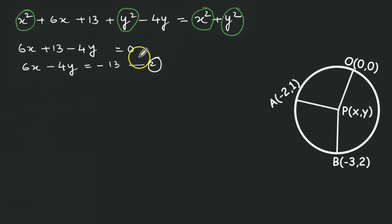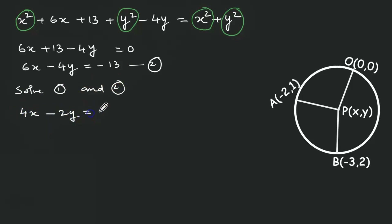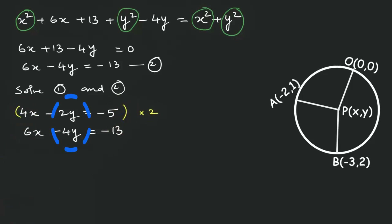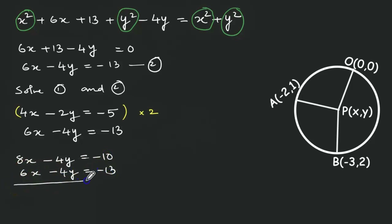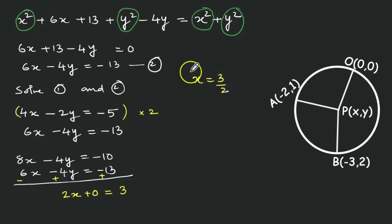Now we solve equations 1 and 2. Equation 1 is 4x minus 2y equals minus 5, and equation 2 is 6x minus 4y equals minus 13. Multiplying equation 1 by 2 gives 8x minus 4y equals minus 10. Subtracting equation 2 from this: 8x minus 6x is 2x, the 4y terms cancel, and minus 10 plus 13 gives plus 3. So 2x equals 3, therefore x equals 3 by 2.